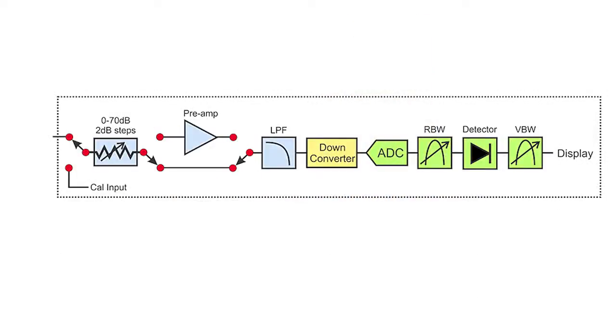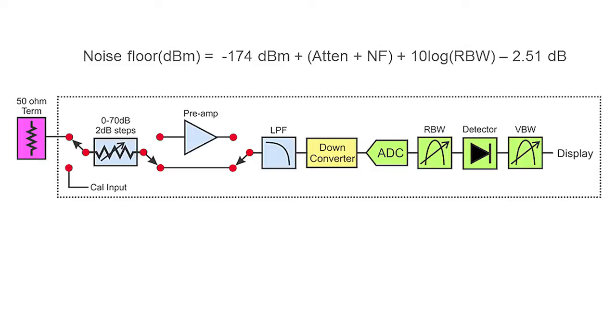First, let's take a look at a simplified block diagram showing a typical signal analyzer with the analyzer's input terminated in a 50 ohm load. The equation on the top shows the parameters used for calculating the noise floor.